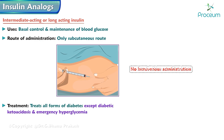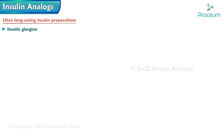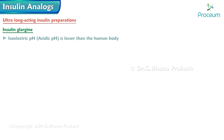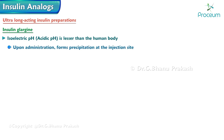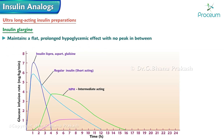NPH insulin treats all forms of diabetes except diabetic ketoacidosis and emergency hyperglycemia. Ultra long-acting insulin preparations include insulin glargine, insulin detemir, and insulin degludec. Insulin glargine has an acidic isoelectric pH lower than the human body pH; upon administration it forms a precipitate at the injection site, causing slow release and increased duration of action, maintaining a flat prolonged hypoglycemic effect with no peak.